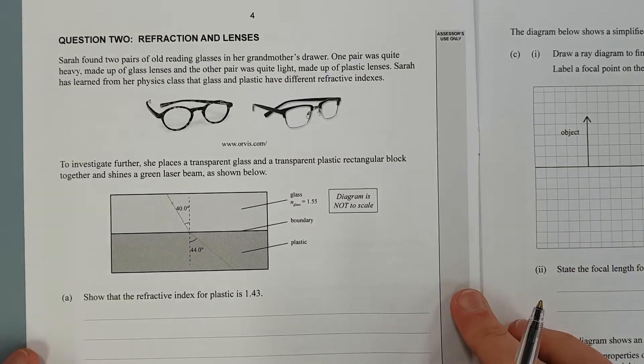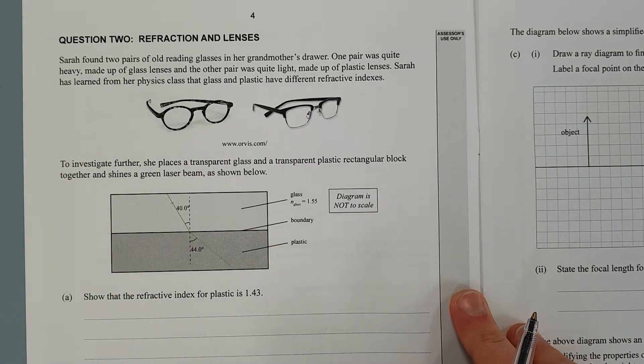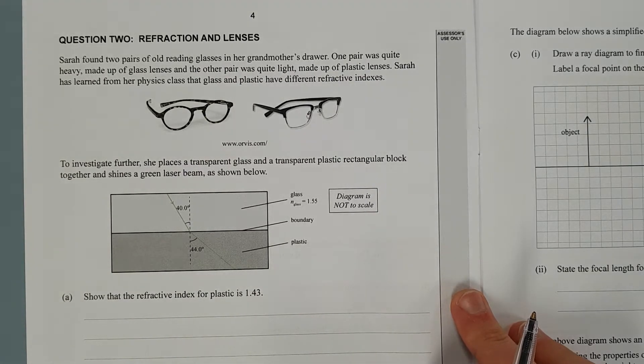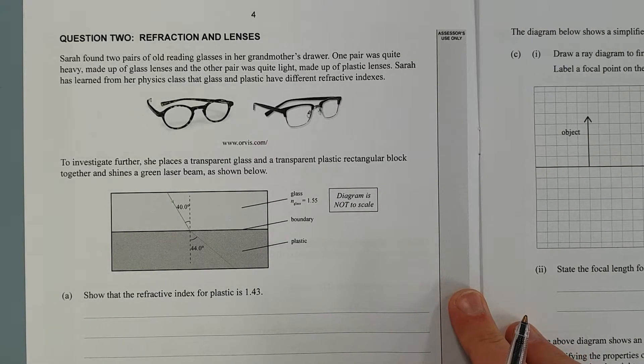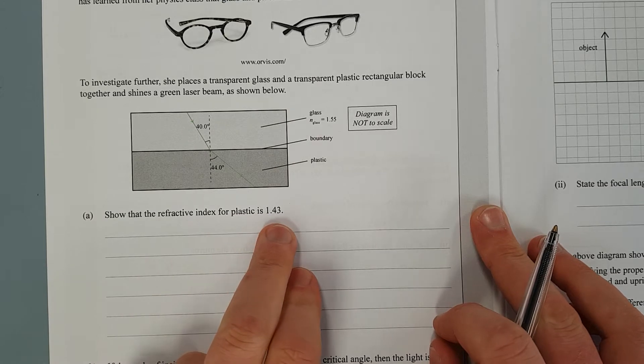Sarah found two pairs of old reading glasses in her neighbour's grandmother's drawer. One pair was quite heavy, made up of glass lenses. The other was quite light, made up of plastic lenses. Sarah has learned from her physics class that glass and plastic have different refractive indexes. To investigate further she places transparent glass and transparent plastic rectangular block together and shines a green laser beam. Good luck finding one of them these days. Show that the refractive index for plastic is 1.43.